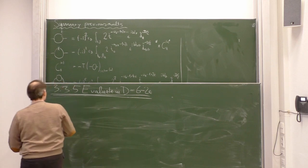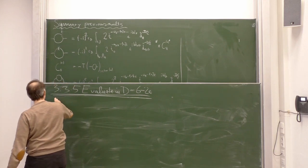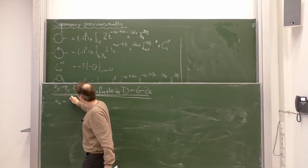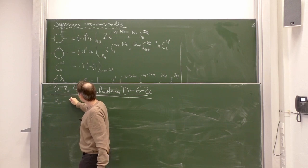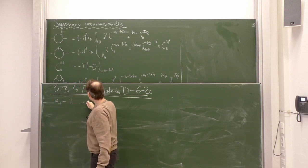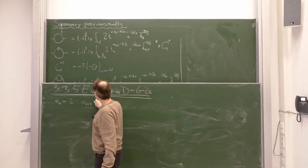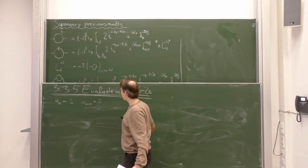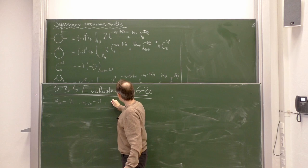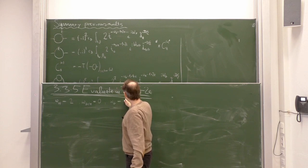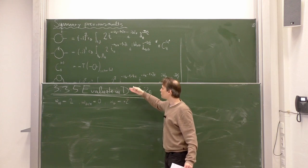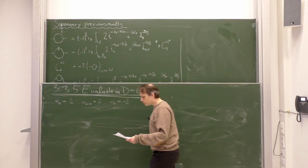Let us first write down the power counting, just to get an overview. Omega of the one loop diagram h is now 2. Omega of the reduced diagram g over h is now 0, because three propagators and six dimensions. And omega of the full graph is also plus 2, so we have a superficial divergence, this time also at the two loop level.